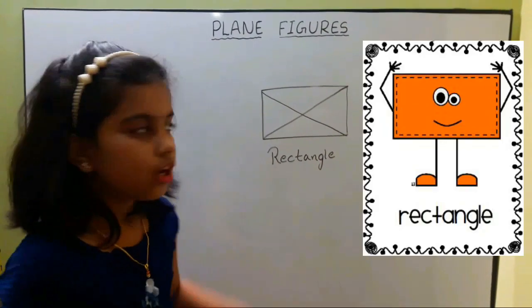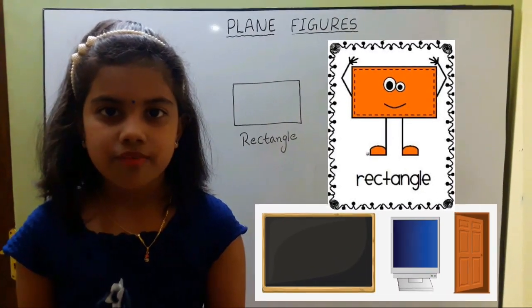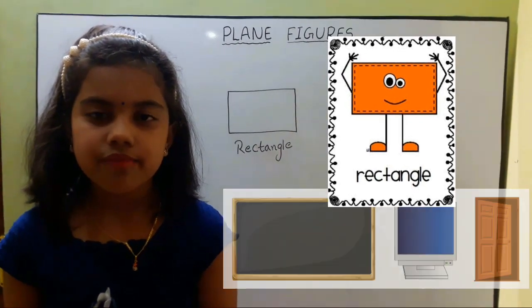Rectangle has two diagonals of same measure. Examples of rectangle in real life are TV and windows.